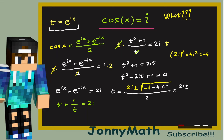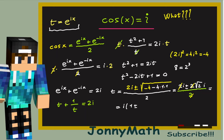So we have t = [2i ± √(-8)] / 2. Now, √(-8): since 8 = 2³, we have √8 = 2√2, and the negative sign brings out an i, so √(-8) = 2√2·i. Therefore t = [2i ± 2√2·i] / 2. Simplifying the twos, and factoring out i, we get t = i·(1 ± √2).